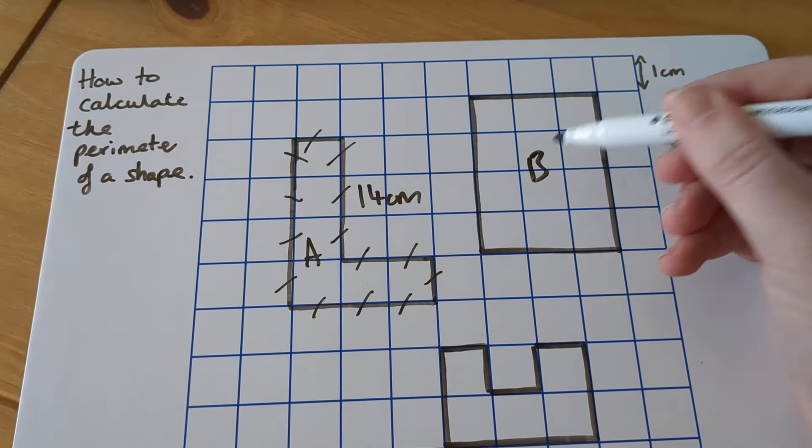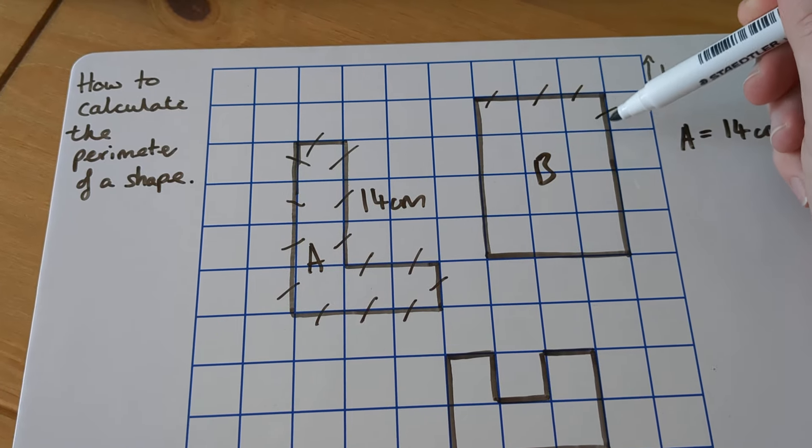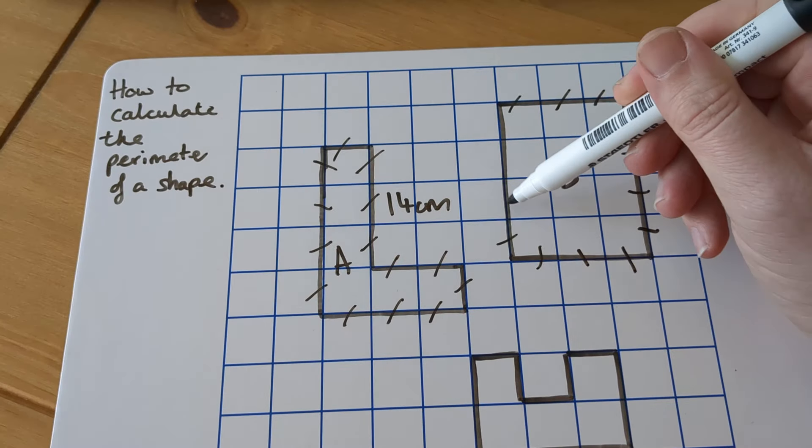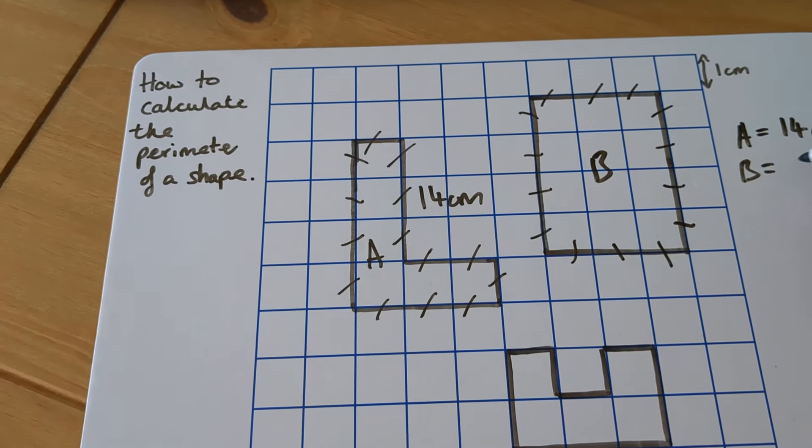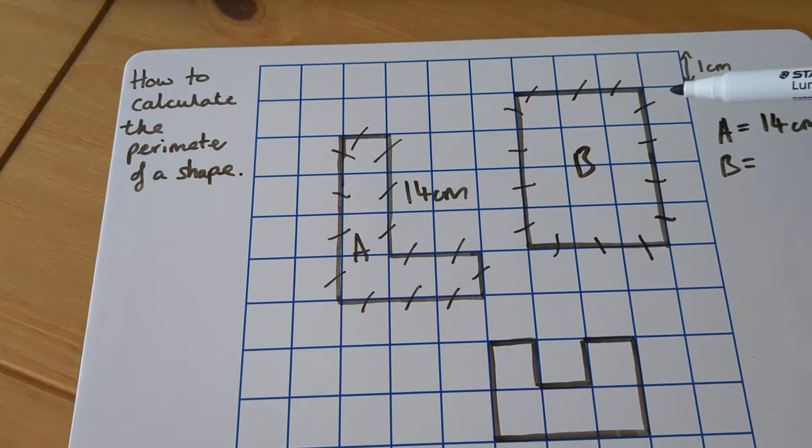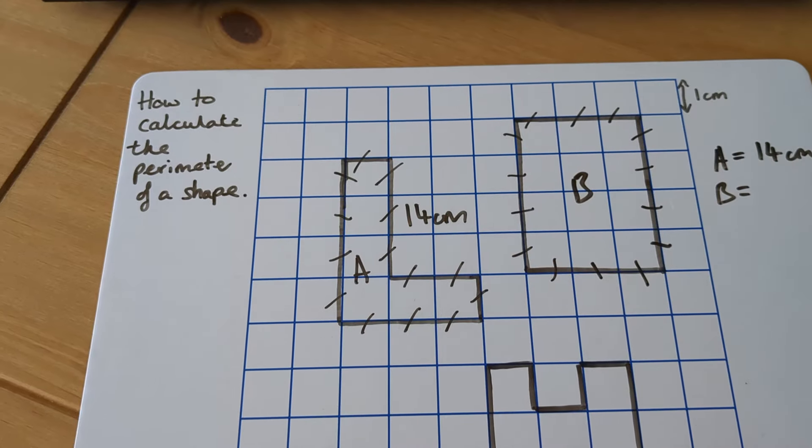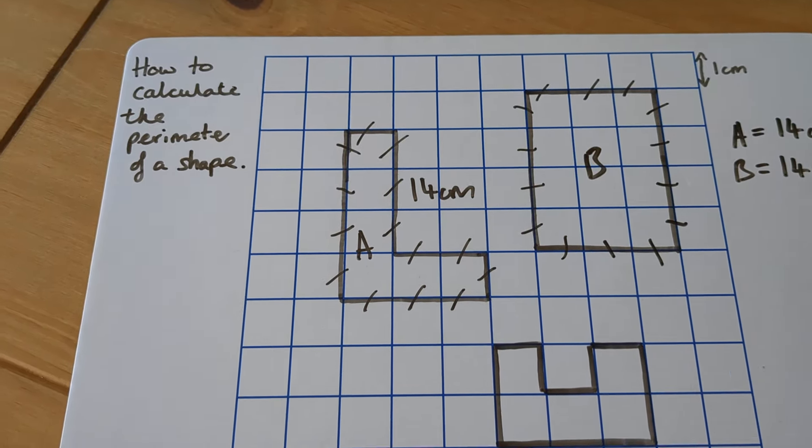We'll do B. We'll go around again. So 1, 2, 3, 4, 5, 6, 7, 8, 9, 10, 11, 12, 13, 14. So B, the perimeter is... Oh, I forgot what it was. 4, 8, 9, 10, 11, 12, 13, 14. Exactly the same. Funny coincidence.